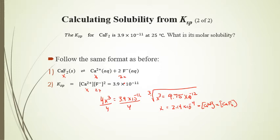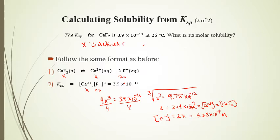For the F⁻ ion concentration, that would be 2 times X, equal to 4.28 × 10⁻⁴ molar. Depending on what the problem asks, you could be asked for the concentration of a particular ion or of the original substance. X is defined as the molar solubility of that substance. The original solid always has a coefficient of 1, so you'll never have more than just X for the concentration of the solid.